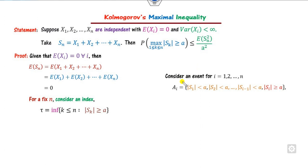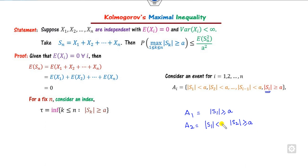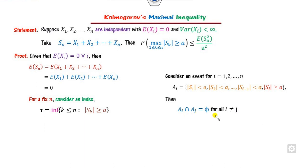So A_1 is the event {S_1 > a}, A_2 is the event {S_2 > a} with S_1 < a, and so on. The intersection A_i ∩ A_j = ∅ for i ≠ j, because there is no common intersection between them. So the events A_i are mutually disjoint.